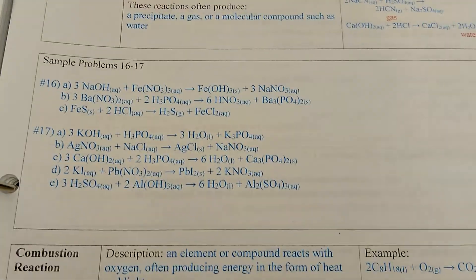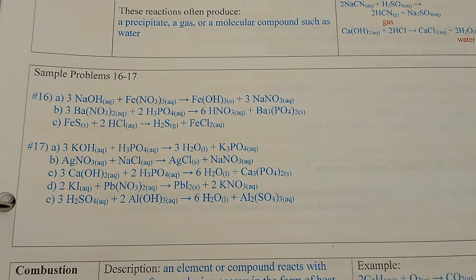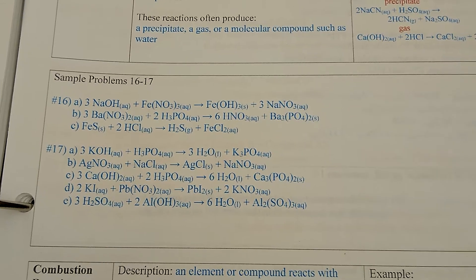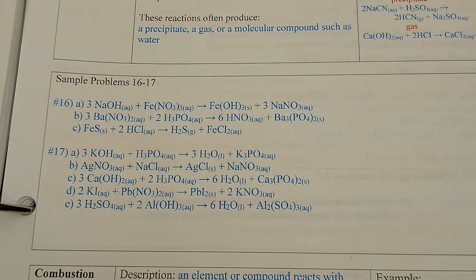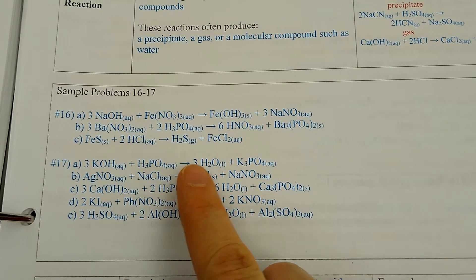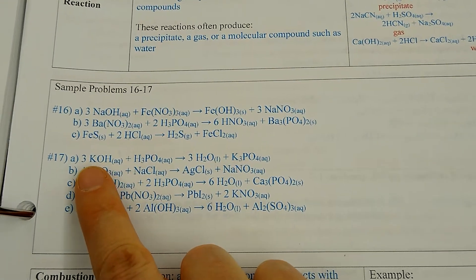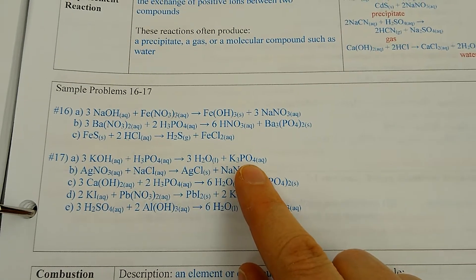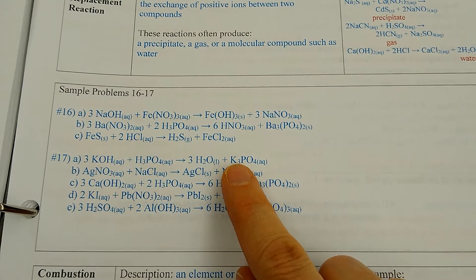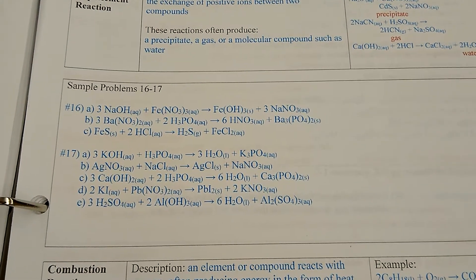Sample problems 16 and 17: number 16 gives you the reactants and one product — you figure out the other. Number 17 also gives you the reactants and one product. For example, 17A tells you KOH plus H₃PO₄ and that water is one of the products. Water is made out of hydrogen and hydroxide, so those pieces are taken. That leaves potassium and phosphate, which combine to form potassium phosphate. PO₄ has a -3 charge and potassium is +1, so K₃PO₄. Balancing charges is the trickiest part to make a balanceable reaction.